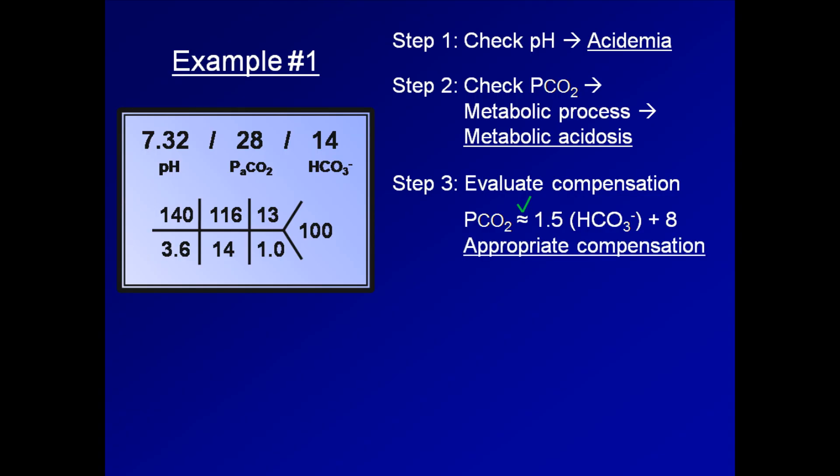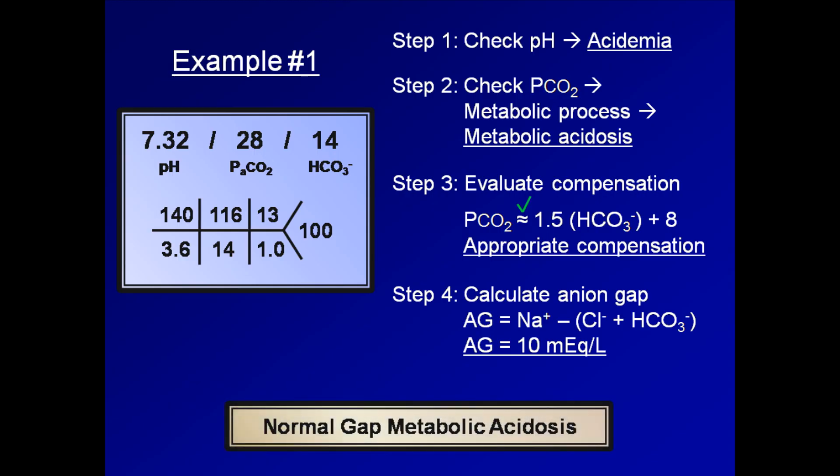From this lecture, we will now add in step number four, which is to calculate the anion gap. The anion gap equals sodium minus the sum of chloride and bicarb. Plugging in our numbers of 140, 116, and 14, we calculate the anion gap to be 10 mEq per liter. As we are not given an albumin, we will need to assume it is normal, and thus the anion gap does not need to be further adjusted. So, we have an appropriately compensated metabolic acidosis with a normal anion gap, or stated more succinctly, a normal gap metabolic acidosis.